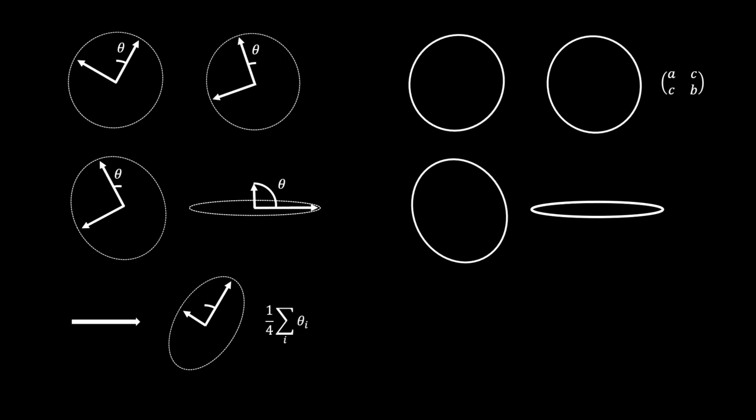Now using tensors encoded as a 2x2 symmetric matrix, the linear average of parameters robustly produces an ellipse which better captures orientation and shape.